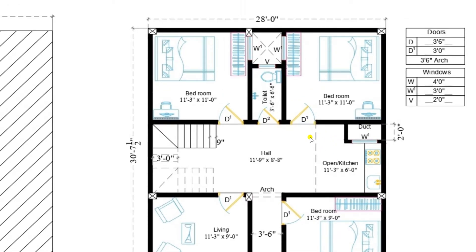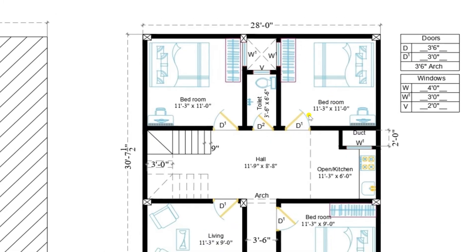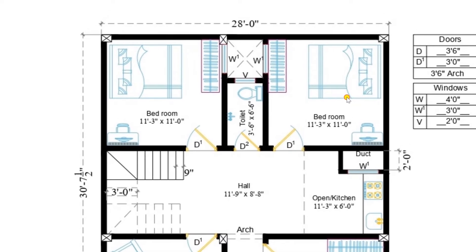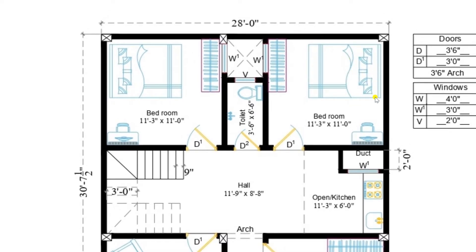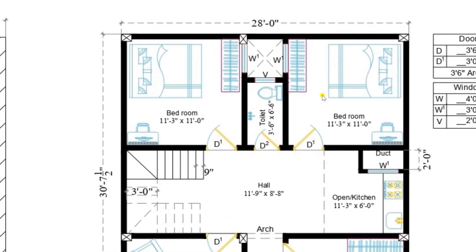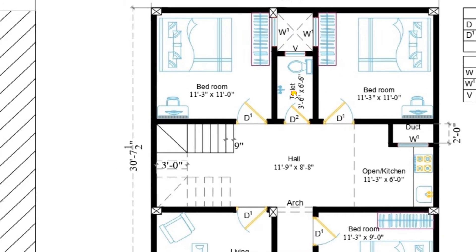After the open kitchen, let us go to the bedroom. I have entered into the bedroom — this is the D1 door size as already discussed. The bedroom size is 11 feet 3 inches by 11 feet. You can see the bed size is accommodated, and there is a wardrobe available here. Beside this, another duct is provided for the purpose of ventilation.